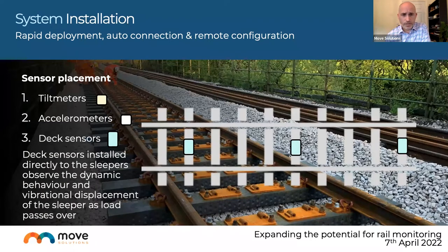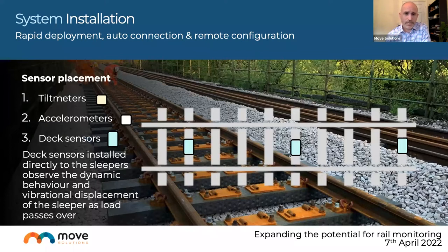Deck sensors are placed directly onto sleepers to monitor the vibrational deflection of the sleeper, rail, and underlying ballast as a train passes over. This identifies whether there is a consistent vibrational displacement response over a length or anomalies in deflection, presenting concerns over the density and stability of the ballast below the track. The deck sensor records millimeter displacement — positive and negative — as the sleeper oscillates when the train passes, allowing comparison of deflection over a rail length to identify areas where oscillation is increasing.